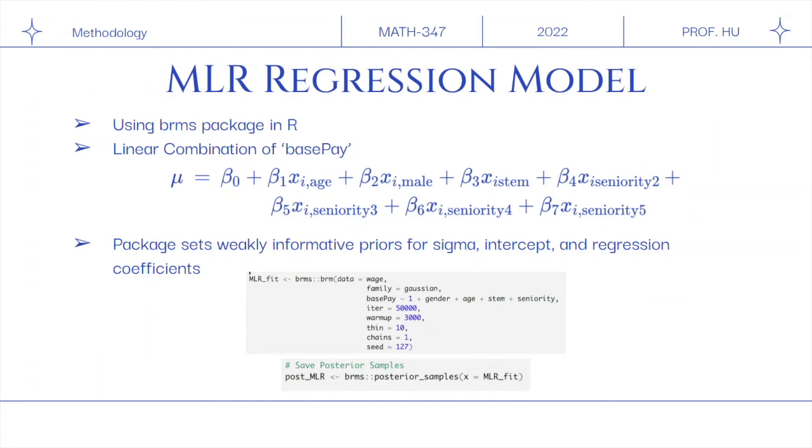And then, for the basic Bayesian MLR model, we use the BRMS package in R, which is useful because it sets the priors for us. Basically, we're just taking a linear combination of base pay with all predictors, including gender, and saving posterior samples from this posterior distribution.